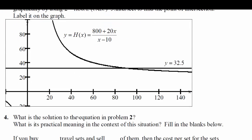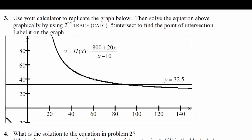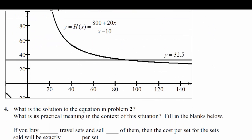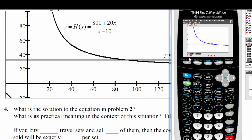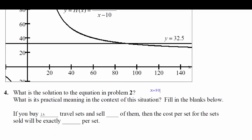So question four says, what is the solution to the equation in problem two? So we've just solved it. That intersection of 90. So I just put a quick x equals 90 over here. The practical meaning in the context of this situation: So if you buy 90 travel sets and sell 80 of them, because we give away 10, then the cost per set for the items sold will be exactly $32.50.